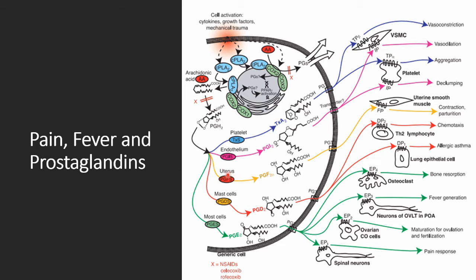There are other useful and harmful prostaglandins. In the uterus, for example, uterine contraction in late or preterm pregnancy is stimulated by prostaglandins, which is a big part of why they'll often give targeted NSAIDs to try and stop early labor. Similarly, mast cells are triggered by these prostaglandins.